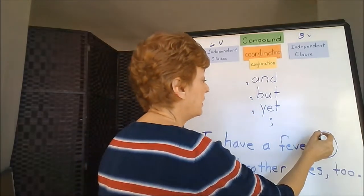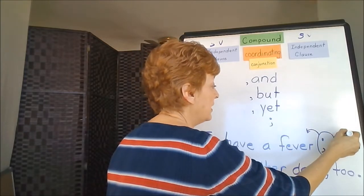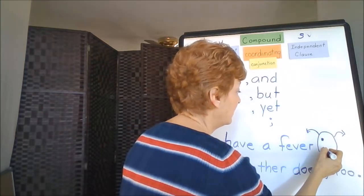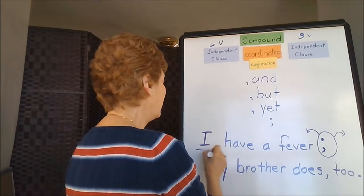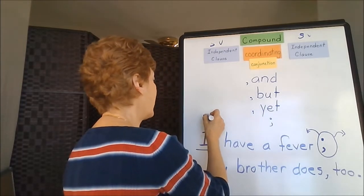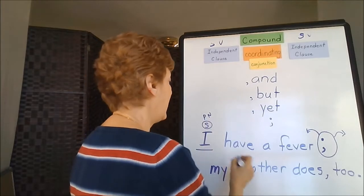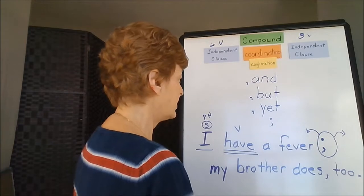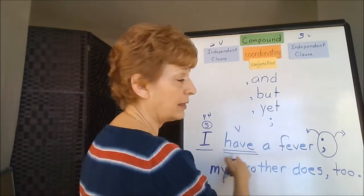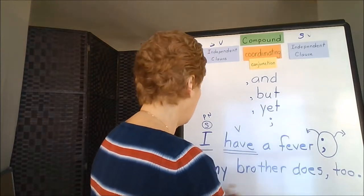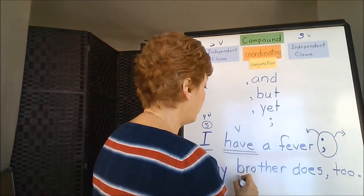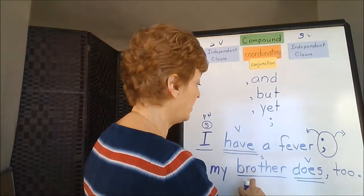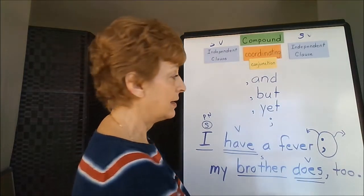Let's look for our subjects and verbs on each side of that semicolon — kind of looks like a face, doesn't it? 'I have a fever.' 'I' is a pronoun that functions as a subject, and 'have' is a verb. So we've satisfied our subject and verb on the left-hand side of the conjunction. 'My brother does too.' Here we have 'brother' as the subject and 'does' as the verb — subject and verb on the right-hand side.